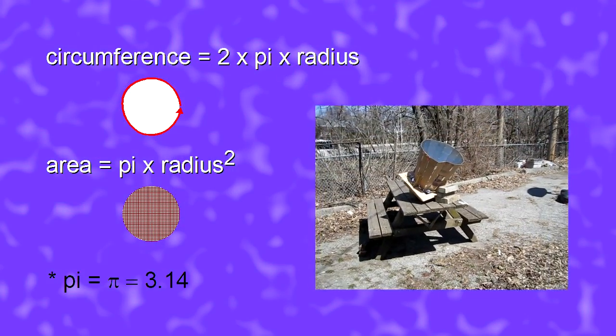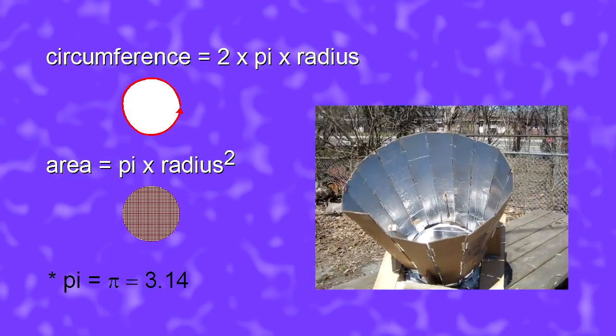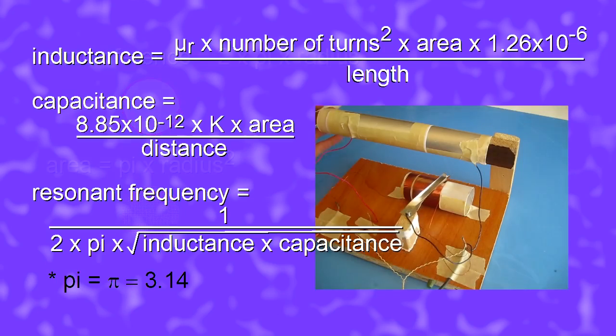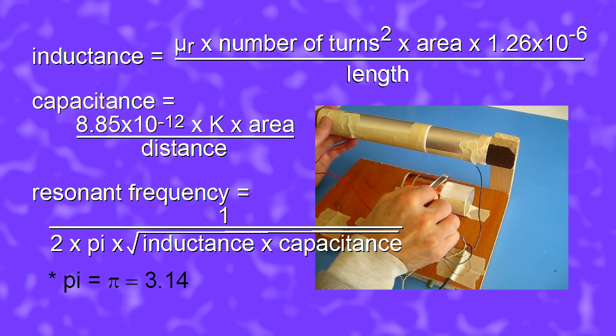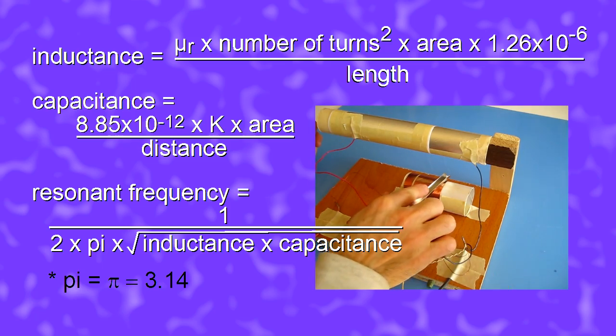Some other formulas I seem to use a lot are the circumference of a circle and the area of a circle, both of which I used for making this cone solar cooker. For crystal radios I use the coil inductance formula, but also the capacitance of a capacitor and the resonant frequency of a coil and capacitor in parallel.